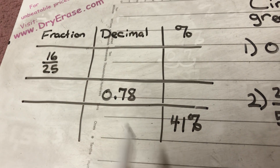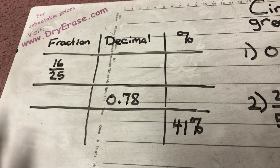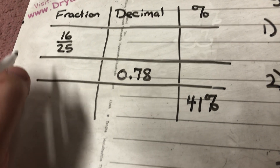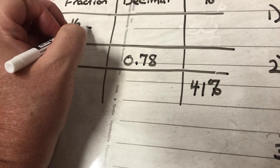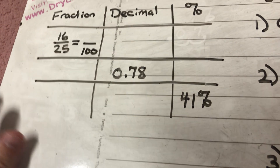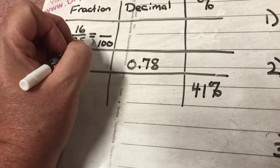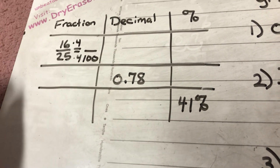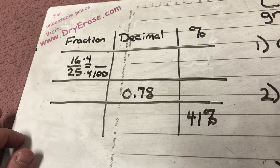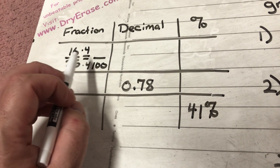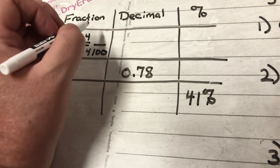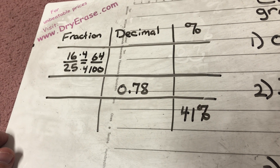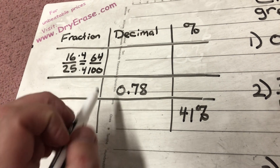To make a decimal and a percent, we know that a percent is out of a hundred, and decimal place values are tenths, hundredths, thousandths — so I'm going to have to make a fraction over a hundred. I know that 25 times 4 is 100, so to find the equivalent fraction I need to do 16 times 4. That's not hard — 16 times 4 is 64, so we get 64 hundredths.